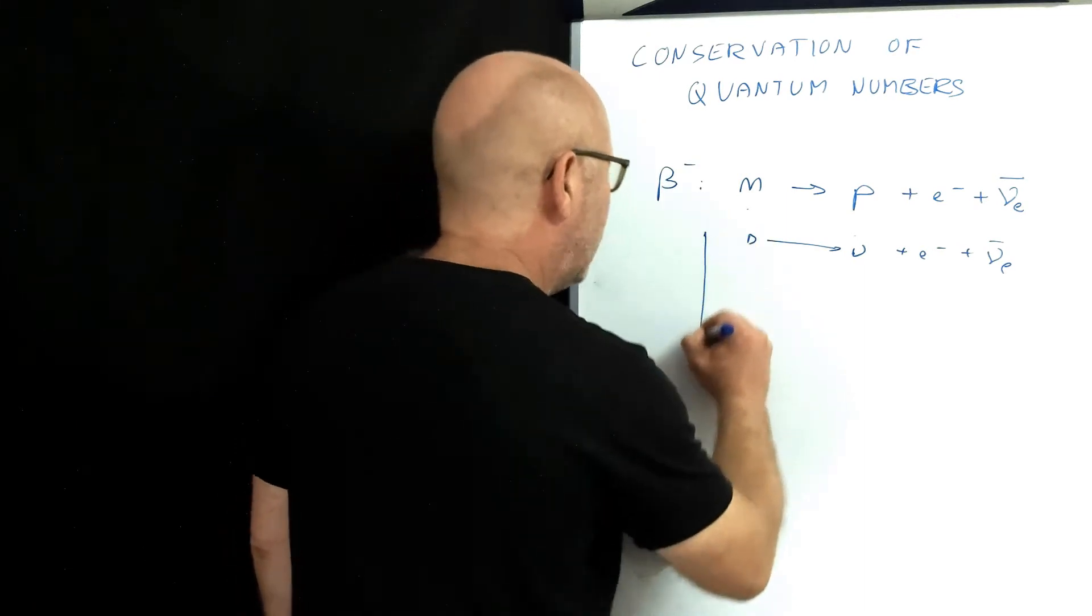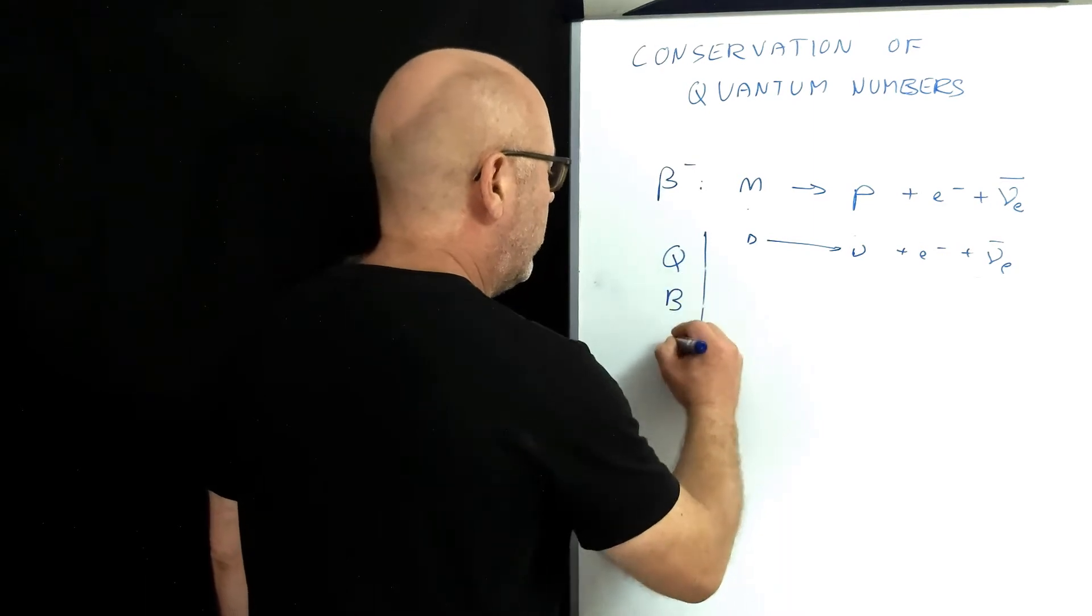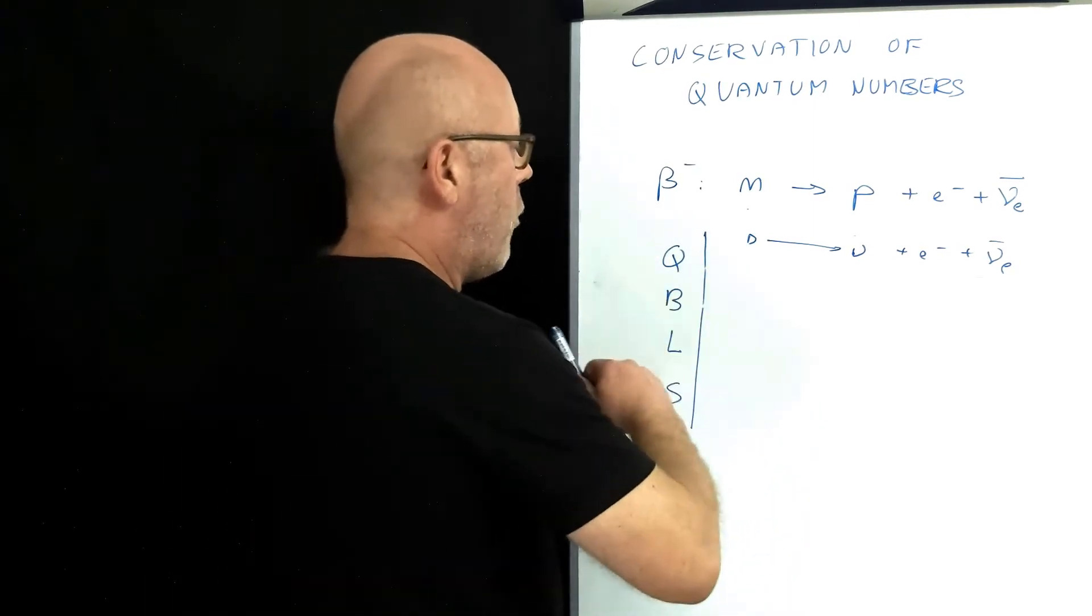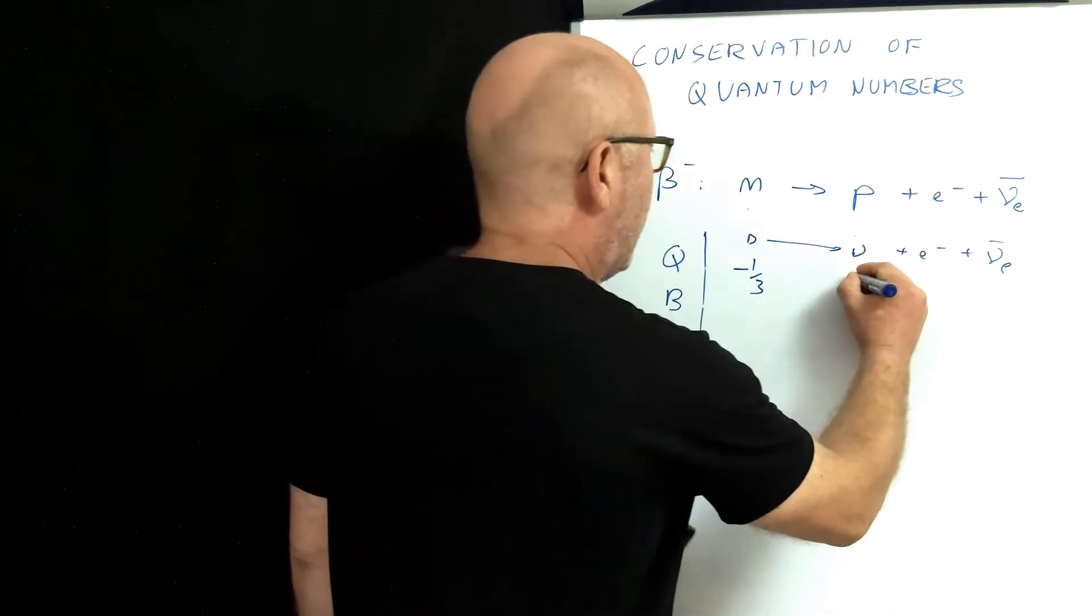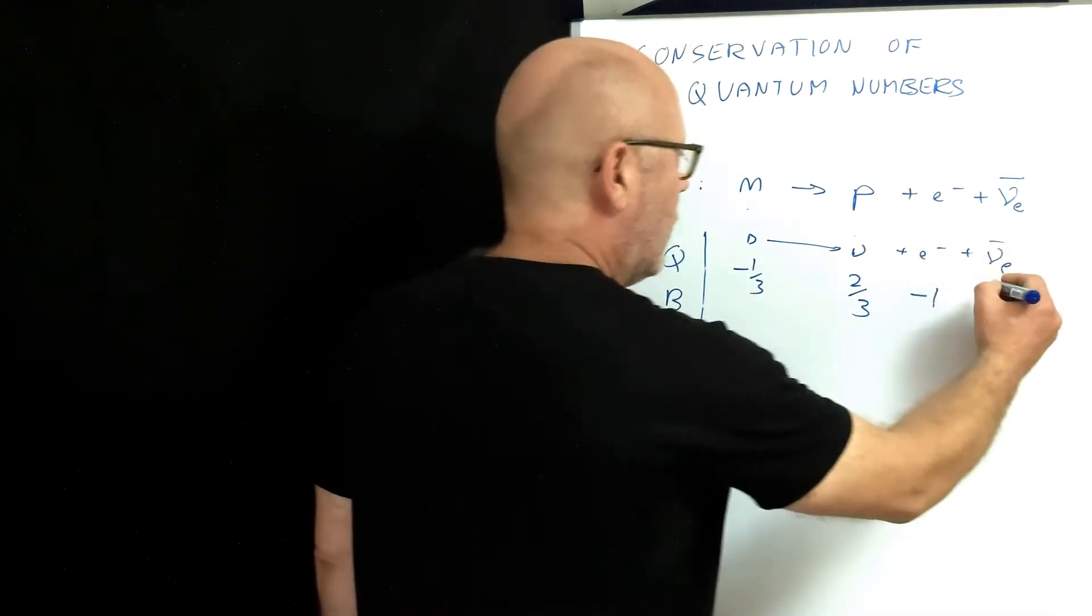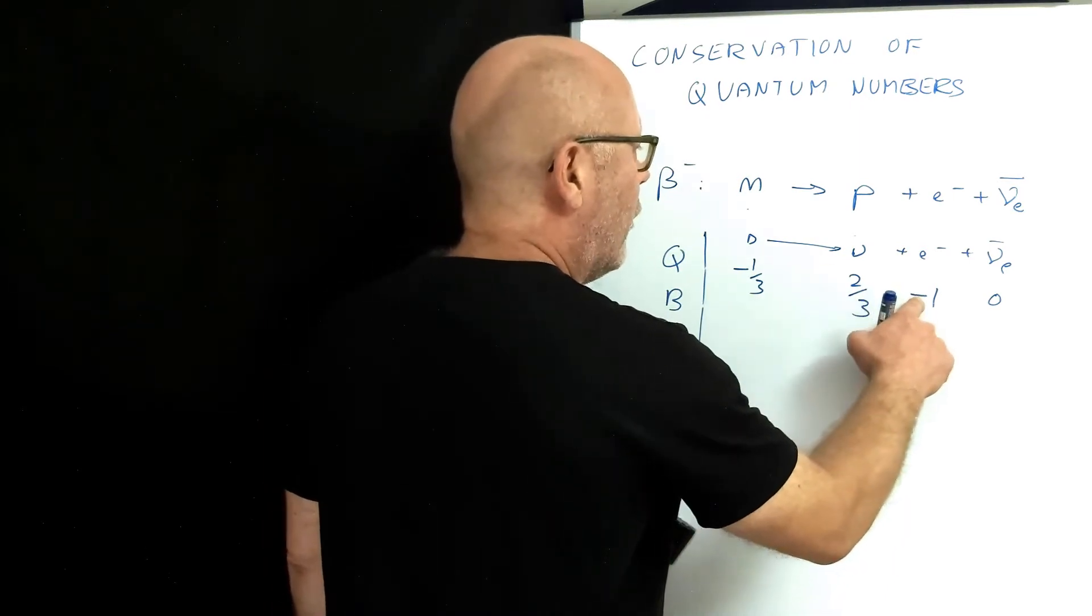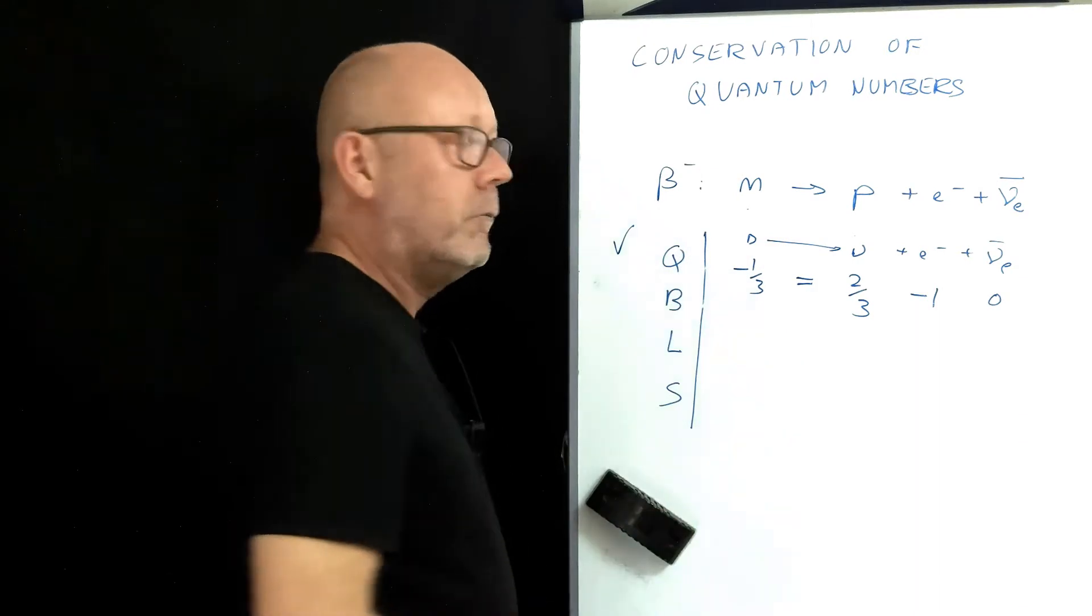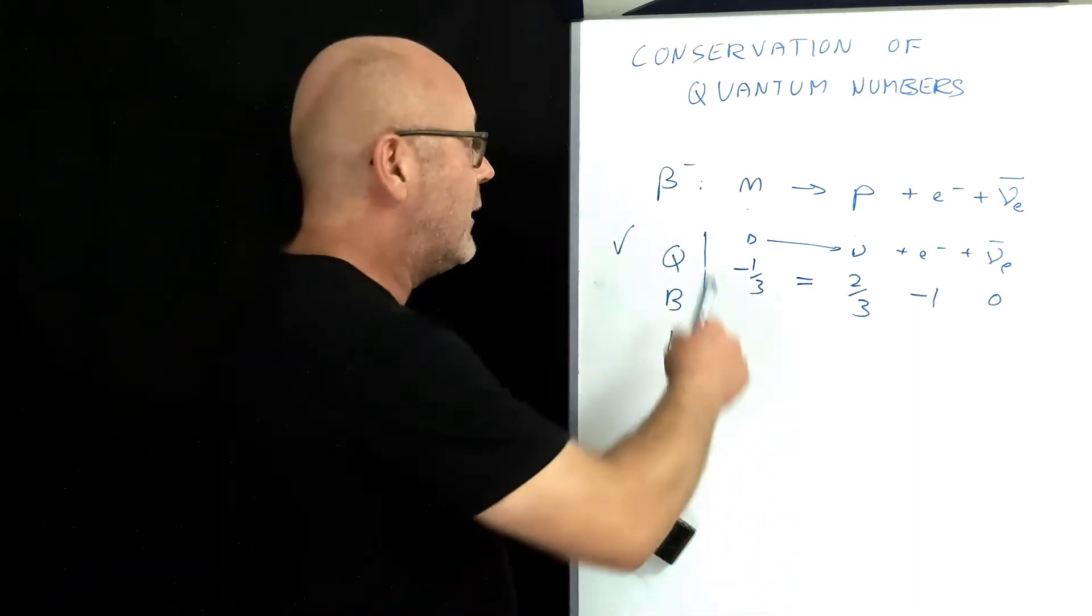Q, B, L, and S. For the down quark, we know that the charge is minus one-third. For the up quark, it's plus two-thirds. For the electron, it's minus one. And the neutrino, the anti-neutrino, is zero. Minus one-third is equal to two-thirds minus one. Check! The law of conservation of charge is respected by this reaction.